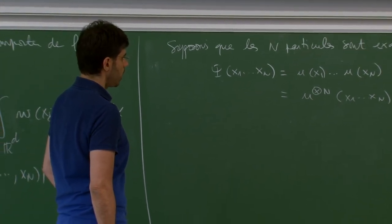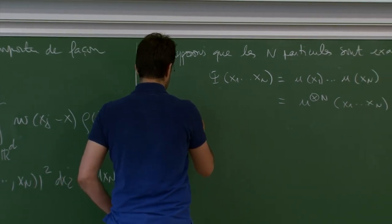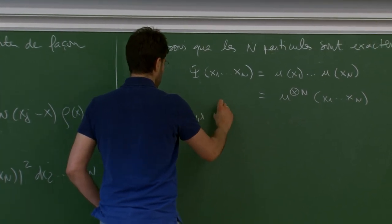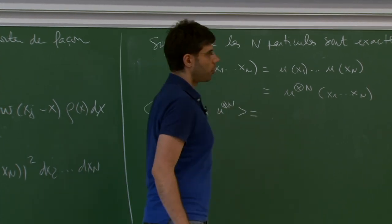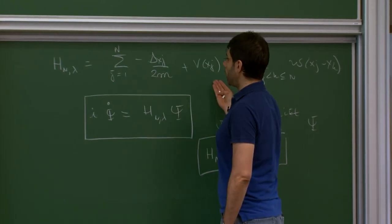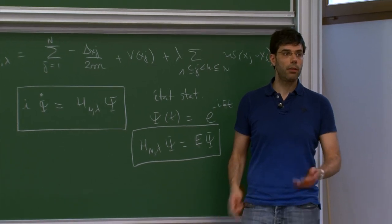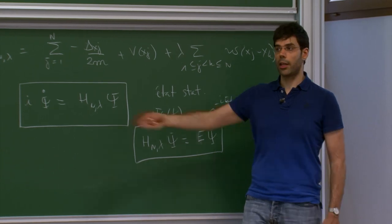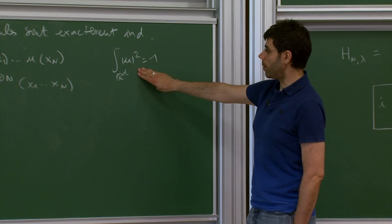This means we take a particular ψ that is a product u(x_1)···u(x_N), where u is a normalized function in R^D — we denote this u^{⊗N}. If ψ is such a product, clearly |ψ|² factorizes, and so does ψ̂. We can now compute the energy of such a function: ⟨u^{⊗N}, H_N u^{⊗N}⟩. Here, there are N terms and they are all the same since the function is symmetric, so we find N times the term where we take only x_1.